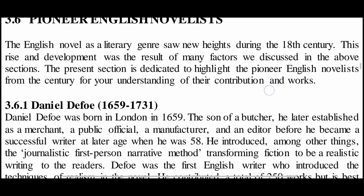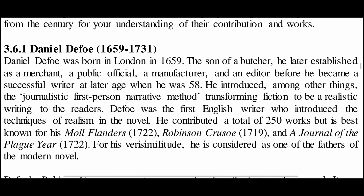Number one: Daniel Defoe, 1659 to 1731. Daniel Defoe was born in London in 1659, the son of a butcher. He later established himself as a merchant, a public official, a manufacturer, and an editor before becoming a successful writer at the later age of 58. He introduced the journalistic first-person narrative method, transforming fiction into realistic writing. Defoe was the first English writer to introduce the techniques of realism in the novel.